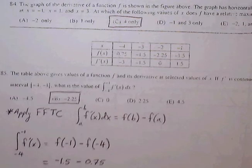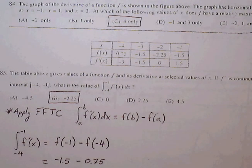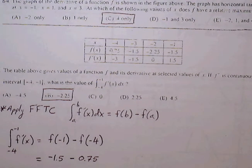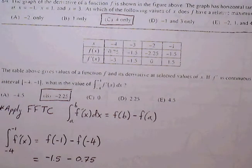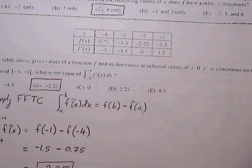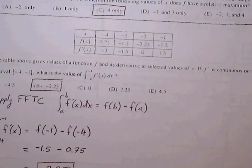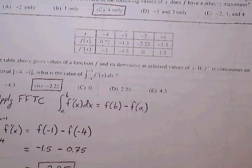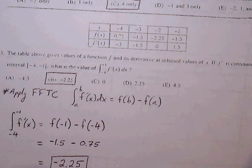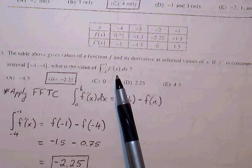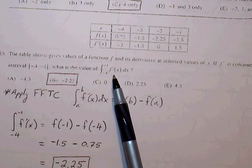85, the table gives values of function for f and for its derivative at selected values of x. If f prime is continuous on the interval from negative 4 to negative 1, what is the value of the definite integral from negative 4 to negative 1 of f prime?